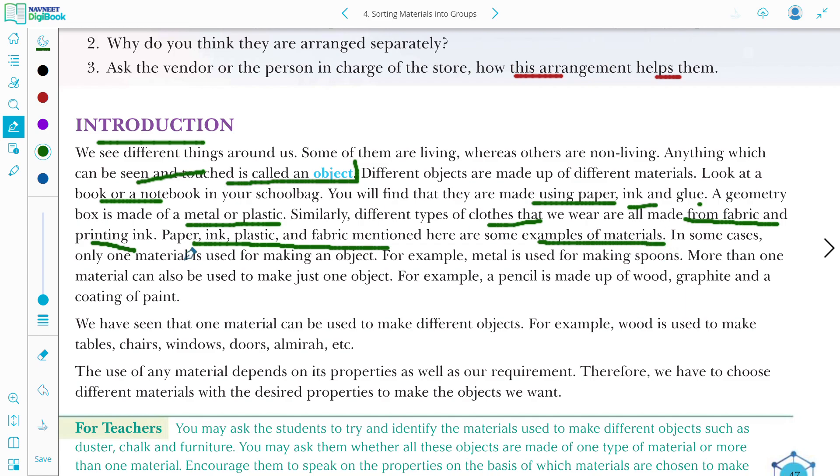In some cases, only one material is used. For example, metal is used for making spoons. More than one material can also be used to make just one object. For example, if you look at your study table, what is it? Wood, sunmica, fabric, all right? So these different objects, different materials are made by one object. For example, a pencil is made up of wood, graphite and coating of paint.